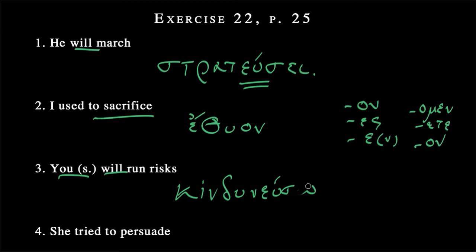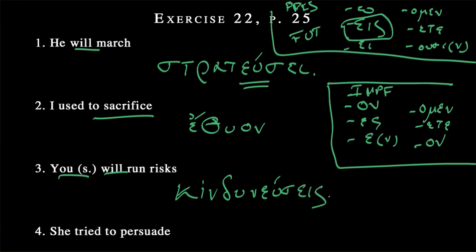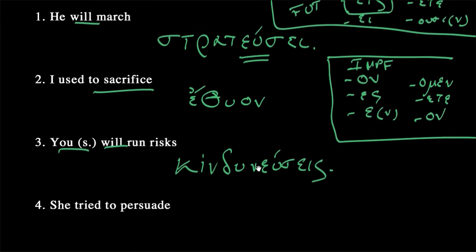So we go back to our primary tense endings, o, eis, ei, and then omen, ete, ousi, again with the nu movable. So this is our present or our future endings here. These are our imperfect, and then we'll get to the aorist when we get there. But we need second person singular, which is eis. So, kinduneuō-seis. You, singular, will run risks. Let's pick this up and move down screen a little bit.